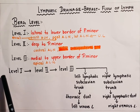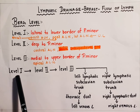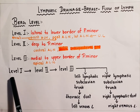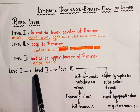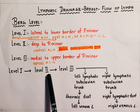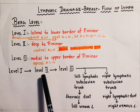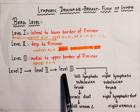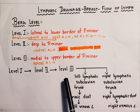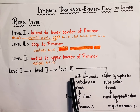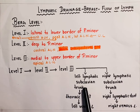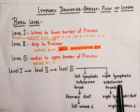Therefore, to summarize: the lymph from breast and upper limb is drained into level 1. From level 1 it is drained into level 2. From level 2 it is drained into level 3. From level 3 it is drained into the left subclavian lymphatic trunk on the left side and the right subclavian lymphatic trunk on the right side.